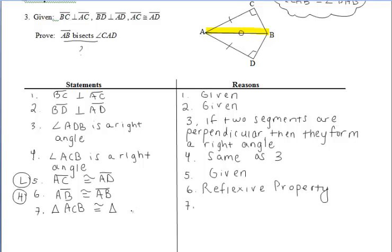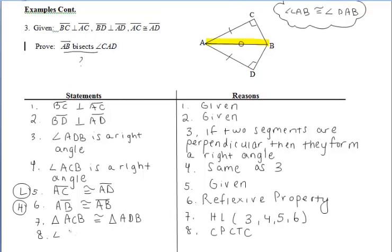Don't forget to mention the steps you used to show that HL works within the proof. We mentioned our right angles in steps 3 and 4, and our congruent hypotenuses and legs in steps 5 and 6. From there, we think back to the two angles we wanted to get congruent in the beginning, and we can list that angles CAB and DAB are congruent by CPCTC. Following that, we state our final conclusion: because those two angles are congruent, Ray AB must have bisected the large angle.